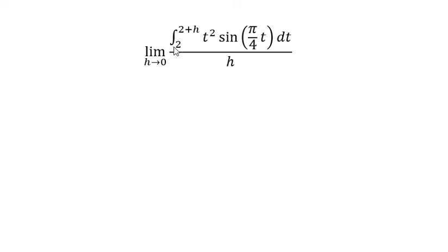But the integral from two to two plus h, when it goes from two to two, this one equals zero. So this one equals zero. That means we have zero over zero.